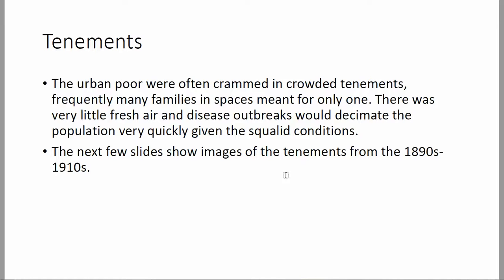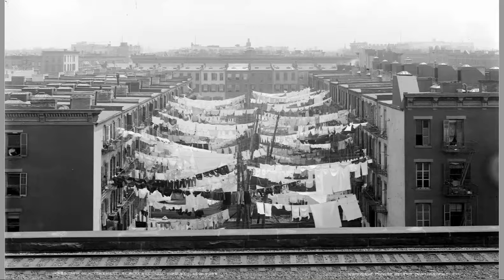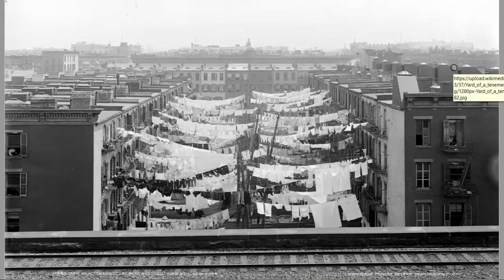Some of these images are from the 1890s to around the 1910s — the same time period in which Crane would have been writing 'Maggie.' These are the kinds of tenements those characters are living in. People also worked in their apartments; they brought home piecework, usually garment work. Maggie makes collars and cuffs — those were detachable pieces you would wear with a dress or a man's shirt.